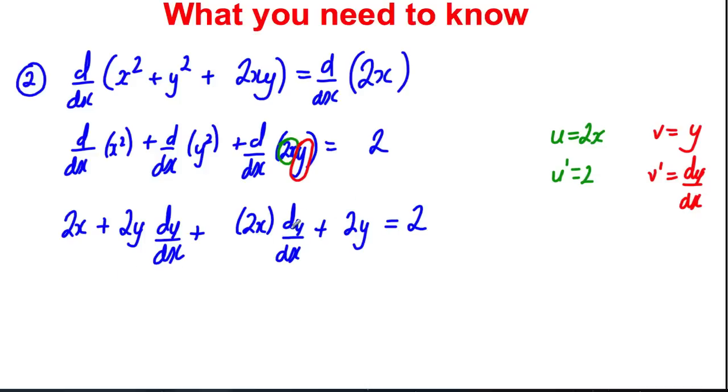And we could collect like terms. We could say here, collecting dy's, we'd have 2y plus 2x lots of dy dx, and that's going to be equal to 2, subtract this 2y, subtract the 2x, and we could make dy by dx the subject of the formula. So that's the next thing we need to know when we're differentiating implicitly, where there's a product of x and y's.